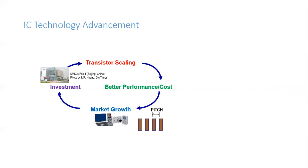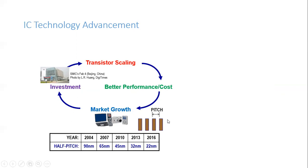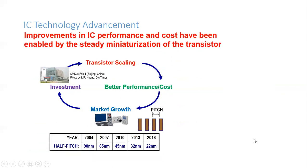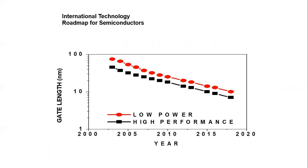The pitch — the distance between two components or two interconnects — was 90 nanometers in 2004 and 22 nanometers in 2016, and has been further reduced since. Improvements in IC performance and cost have been enabled by the steady miniaturization of the transistor. More transistors means better functionality, and that drives market growth.